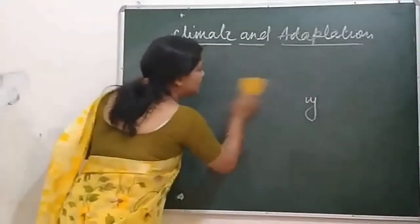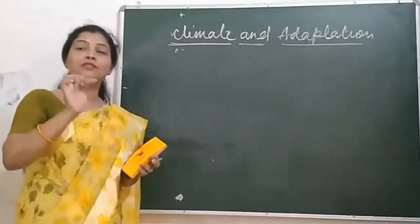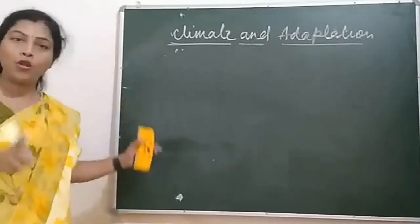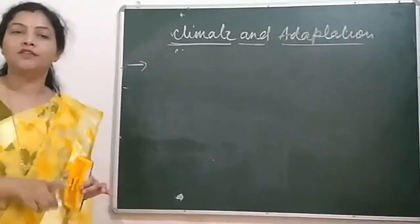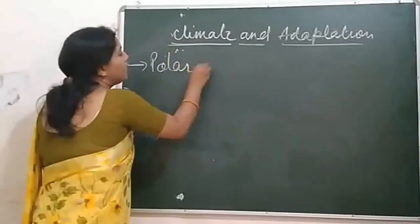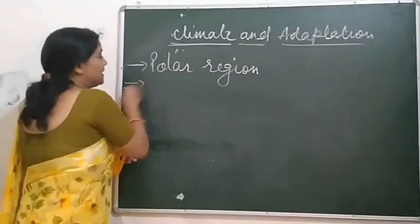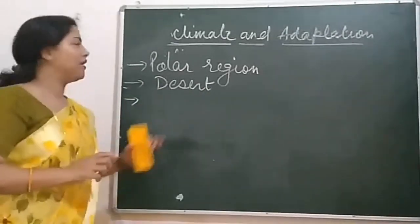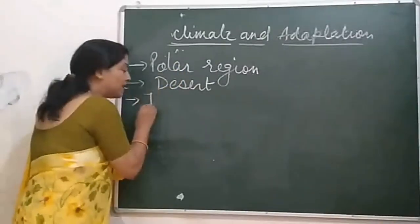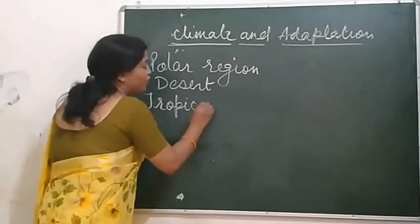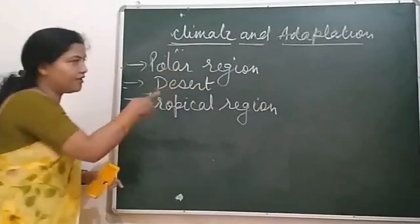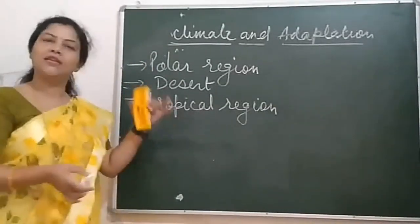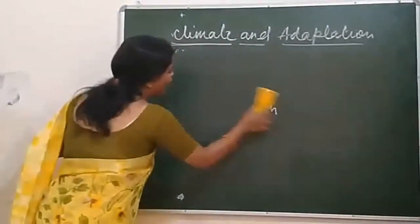On the basis of climatic conditions, the whole earth is divided into three parts. The first part is the polar region, the second part is desert, and the third part — which you must have heard about in social science — is the tropical rainforest or tropical region. These are the three major regions found on the whole earth: polar region, desert, or tropical region.